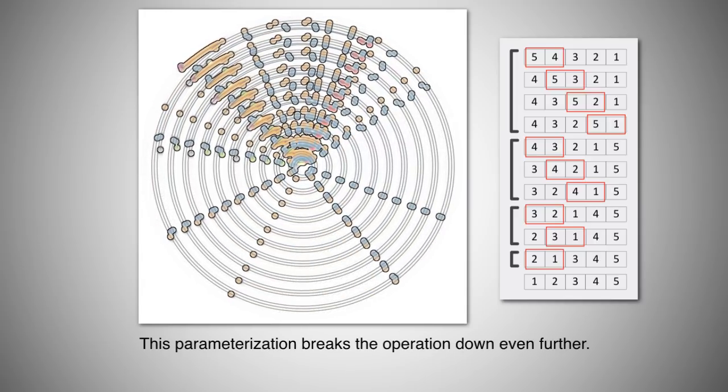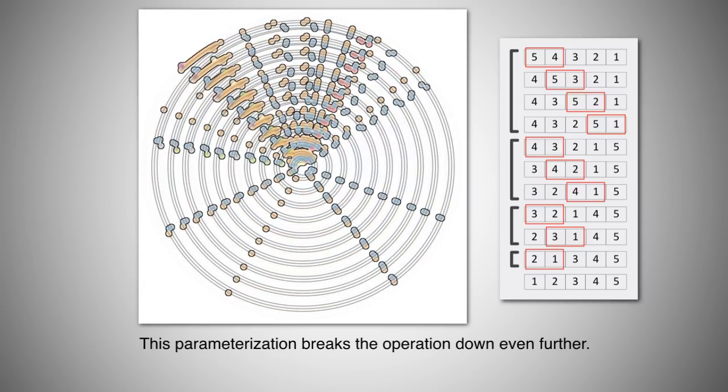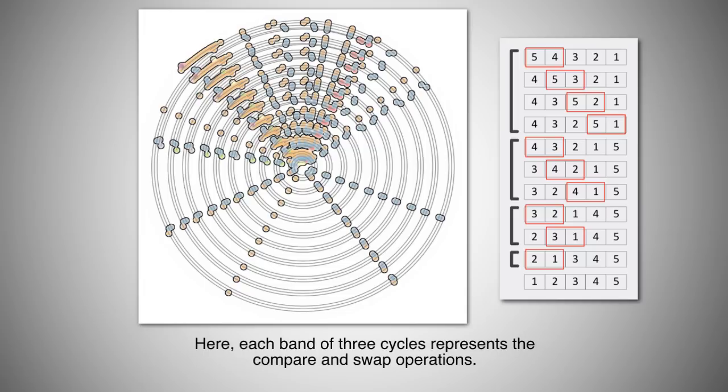This parameterization breaks the operation down even further. Here, each band of three cycles represents the compare and swap operations.